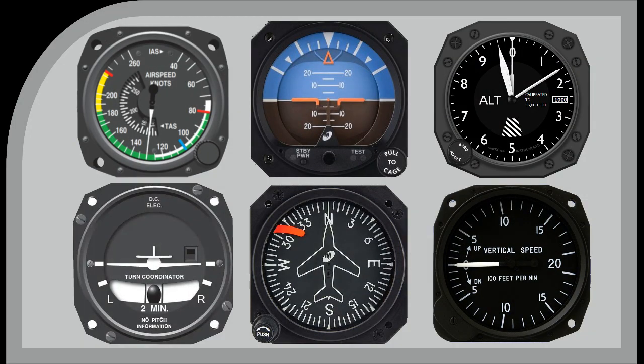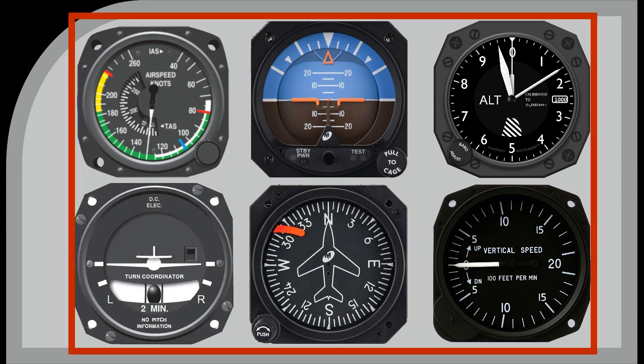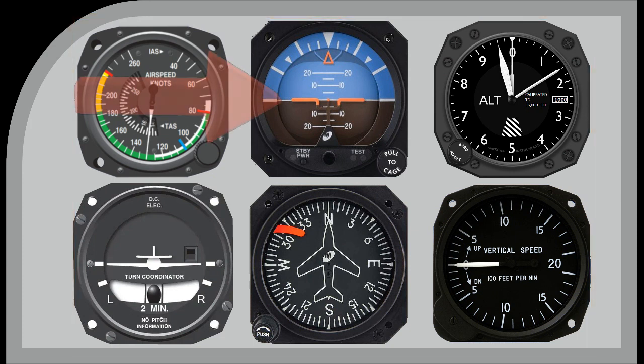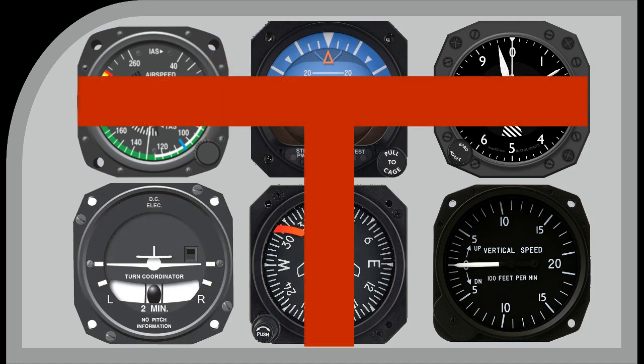During IMC, the pilot will be flying on instruments only. The six instruments on the panel will help the pilot with that task. The pilot should concentrate mainly on the artificial horizon, but will also have a scan, which involves looking at other instruments in sequence. This is where the T-shape comes into being.